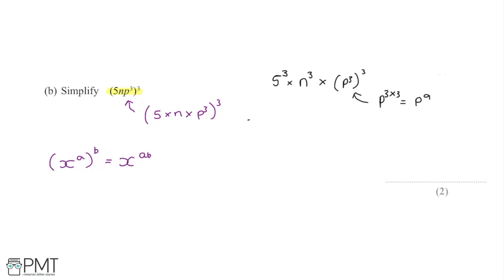We can rewrite that: 5 cubed gives us 125, n cubed is as simplified as it can get, and then we finally have p to the power of 9. These are all multiplied together, so we can write them as one expression: 125 n cubed p to the power of 9. That gains us both marks — the first mark for two correct terms in the product, and the second mark for the fully correct answer.